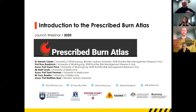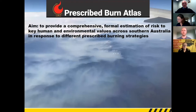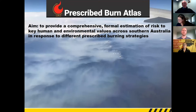I'm going to give a general overview of the Atlas. Naomi has covered a fair bit already in her very comprehensive introduction, but I'll reiterate some key points before handing over to Hamish, who will take you on a detailed tour of the functions and layout. The Atlas is intended to provide a comprehensive formal estimation of risk to key human and environmental values across Southern Australia and how risk may change in response to different prescribed burning strategies.